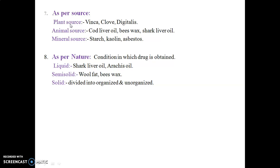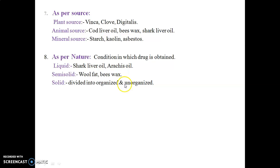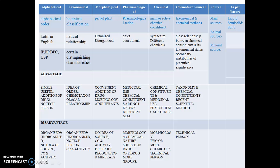The last category is classification as per source and nature. Sources include plant source (e.g., clove, vinca, digitalis), animal source (e.g., cod liver oil, beeswax, shark oil), and mineral source (e.g., starch, kaolin, asbestos). As per nature: liquid form (e.g., oils — shark liver oil), semi-solid form (e.g., wool fat, beeswax), and solid form (further divided into organized and unorganized categories).